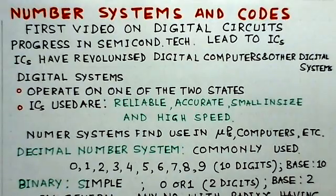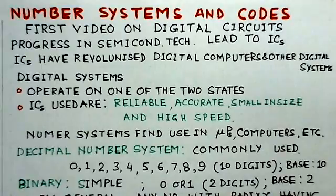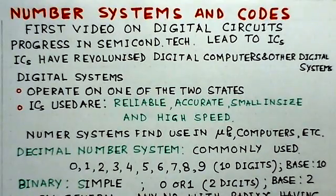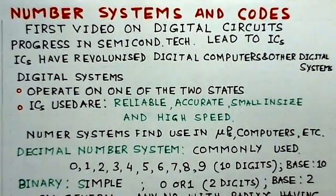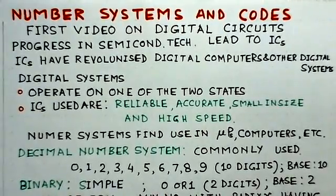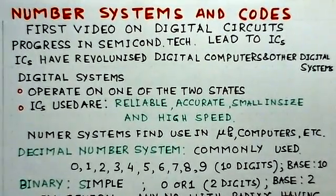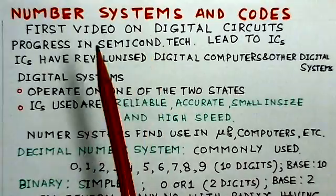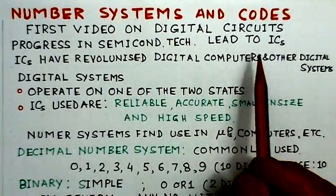Looking into earlier GATE papers, we observe that most problems in previous GATE examinations are based on binary arithmetic, especially two's complement arithmetic. So we'll try to give an elaborate example for two's complement arithmetic for better understanding. Now we start with number systems and codes, the first topic on digital circuits.